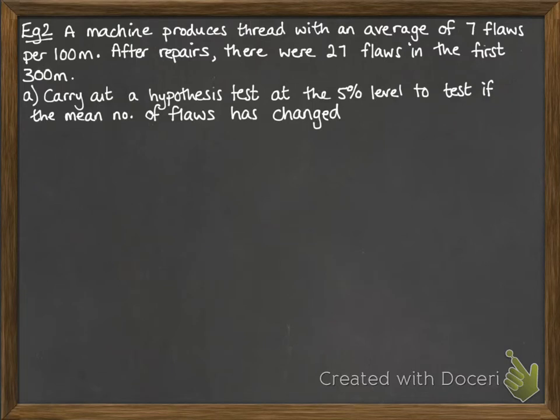Our second example. A machine produces thread with an average of 7 flaws per 100 metres. After some repairs were done, there were 27 flaws in the first 300 metres produced by this machine. We're going to carry out a hypothesis test at 5% to see if the mean number of flaws has changed.